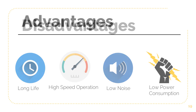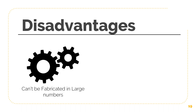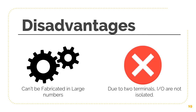Here are some disadvantages of tunnel diodes. First, tunnel diodes cannot be fabricated in large numbers. Second, being a two-terminal device, the input and output are not isolated from one another.